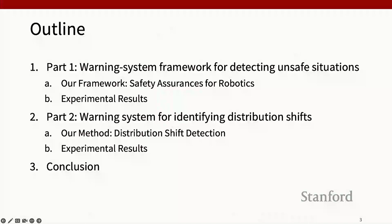In this talk, I'm going to present two ways of addressing this problem. In the first part, I'll introduce a real-time warning system framework for detecting unsafe situations when there's no distribution shift — for example, in a driver assistance setup, the system could provide a warning when you're about to crash. One limitation of this method is that the distribution of unsafe samples needs to be the same between training and test data. So in the second part of this talk, I'll present a method for detecting distribution shifts — for instance, if an autonomous vehicle is deployed and the weather changes over time or we have sensor degradation.